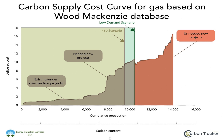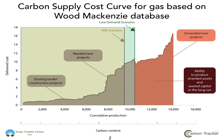To the right-hand side of the curve, shown in orange, is what we call the unneeded new projects. These are new projects identified in the database that would not be consistent with that low demand scenario, and therefore this represents the ability to produce wasted capital and stranded assets in the very long run. So we have the cumulative production, the carbon content, a cost curve, and an interaction with demand — with the low demand scenario being the key focus, which we believe is a credible scenario for the industry to examine.